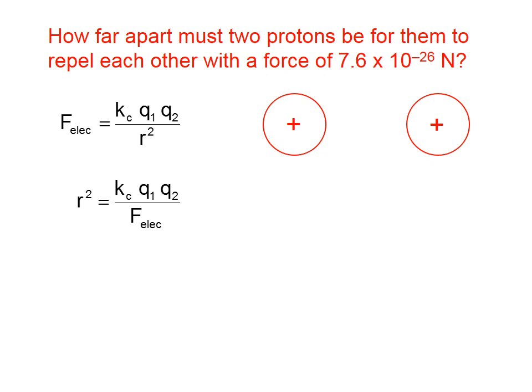The first thing we want to do is multiply both sides by r squared and divide both sides by the electric force, which gives us this expression. Then, we need to take the square root of both sides to solve for the distance.